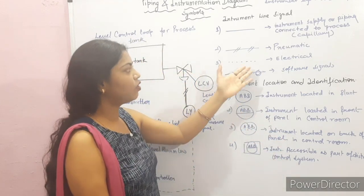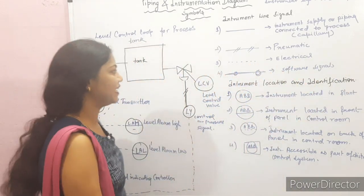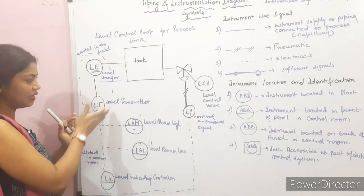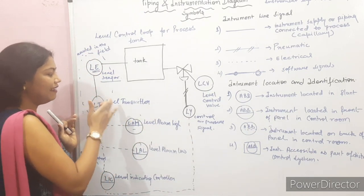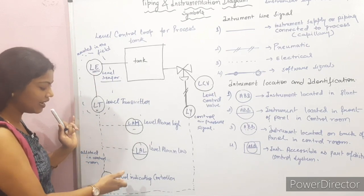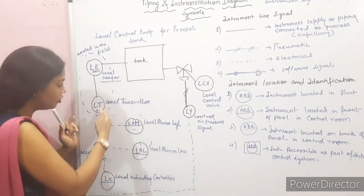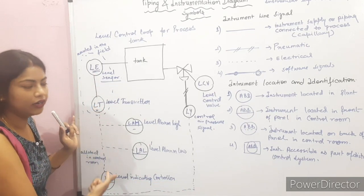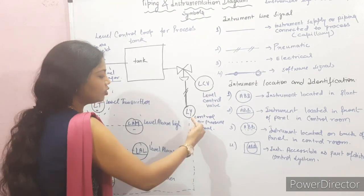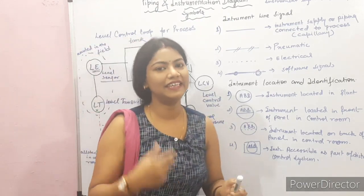If we have a dotted line, it sends electrical signals. As I mentioned, the level transmitter sends electrical signals to the level indicating controller, so a dotted line is used there because we are sending electrical signals.